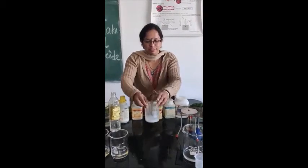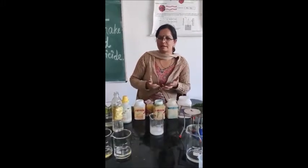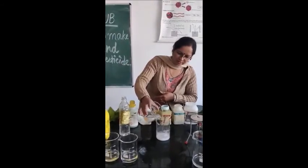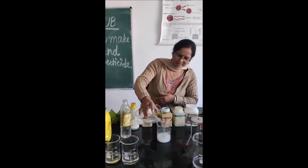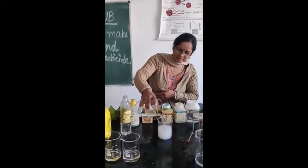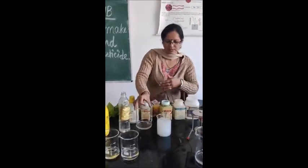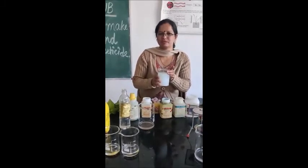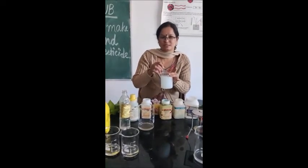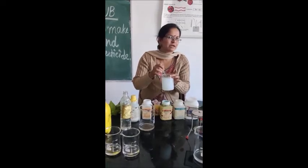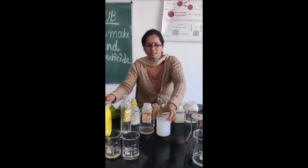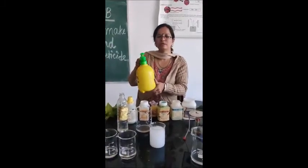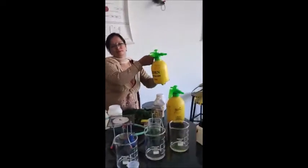What we will do next is dilute this solution up to 500 ml or 1000 ml. I will just add more water into it so that the dilute solution can be prepared. This solution can be used as a pesticide — it is the best pesticide to kill insects, pests, as well as microbes like fungi that are affecting our plants. We can fill this liquid into a spray bottle and spray it on the plants.